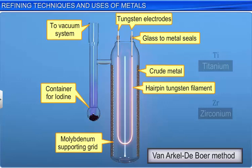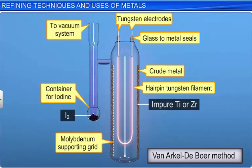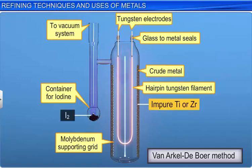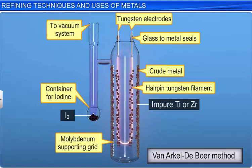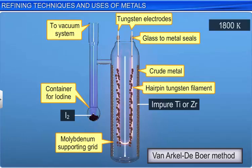Another example of vapor phase refining is the Van Arkel-De Boer method for the purification of titanium and zirconium. In this method, titanium or zirconium, which contain oxygen and nitrogen as impurities, are heated in an evacuated vessel with iodine to form volatile titanium tetraiodide or zirconium tetraiodide. The metal iodide is then decomposed on a white-hot tungsten filament at 1800 Kelvin to give the pure metal.